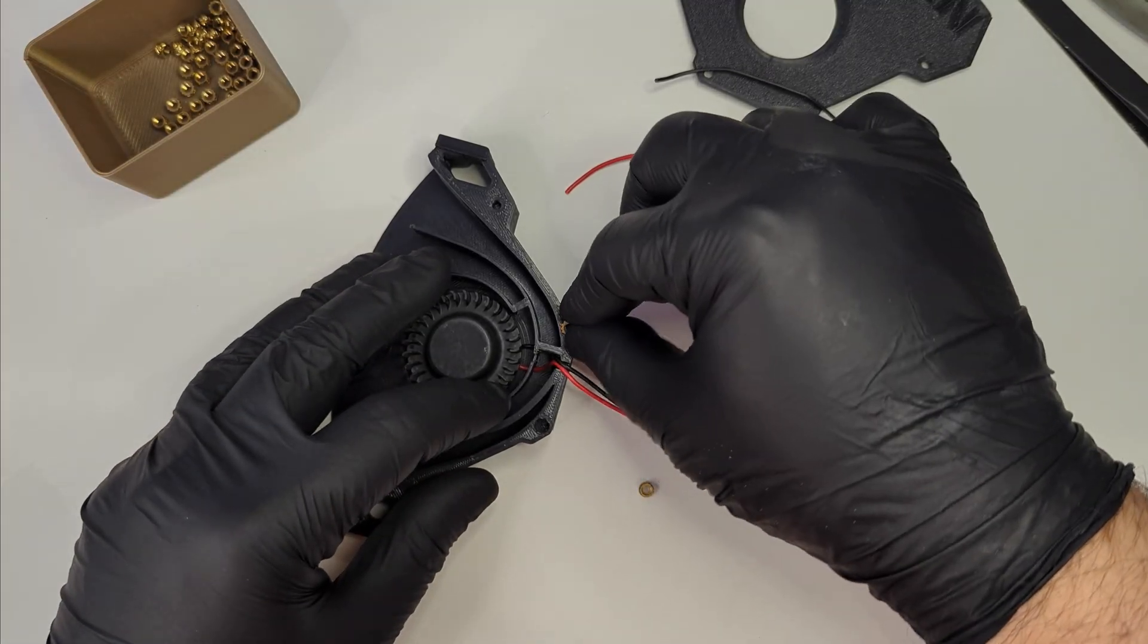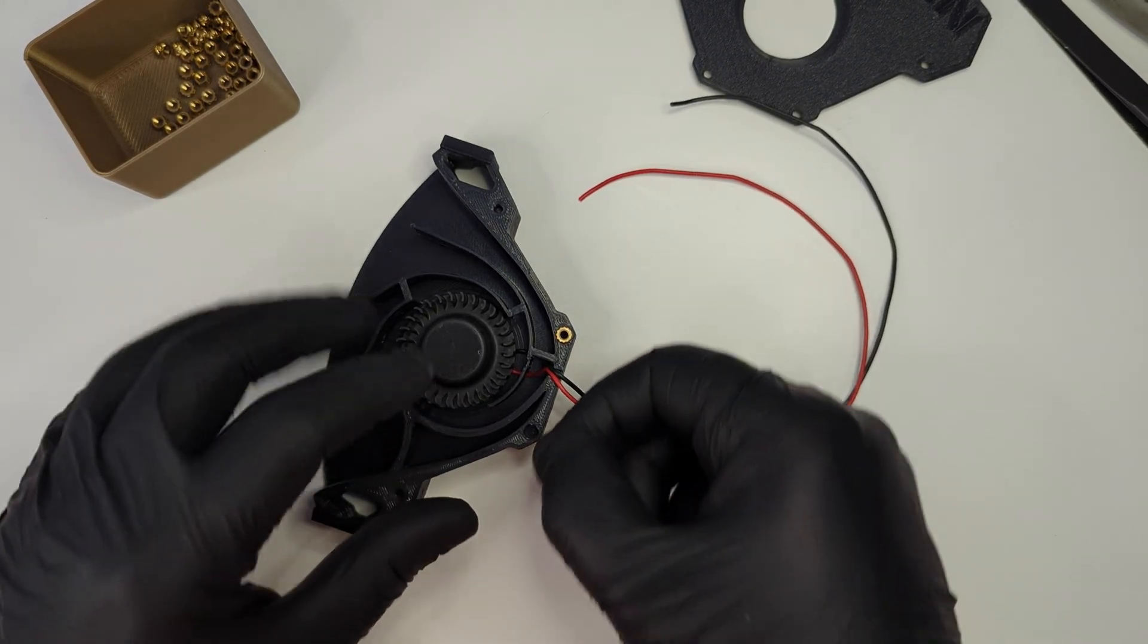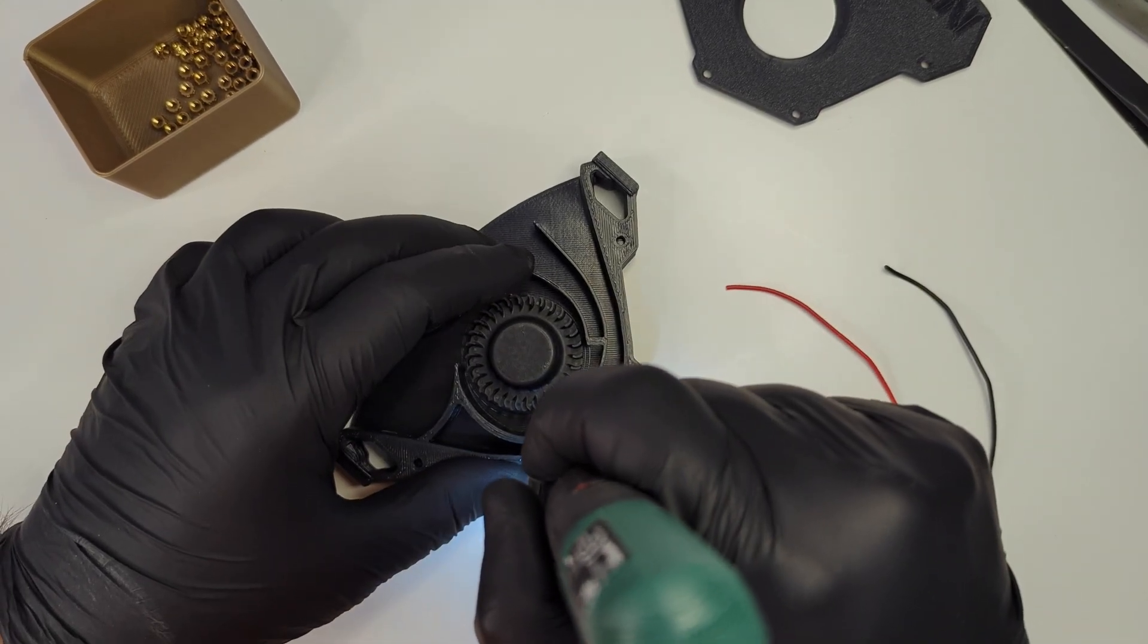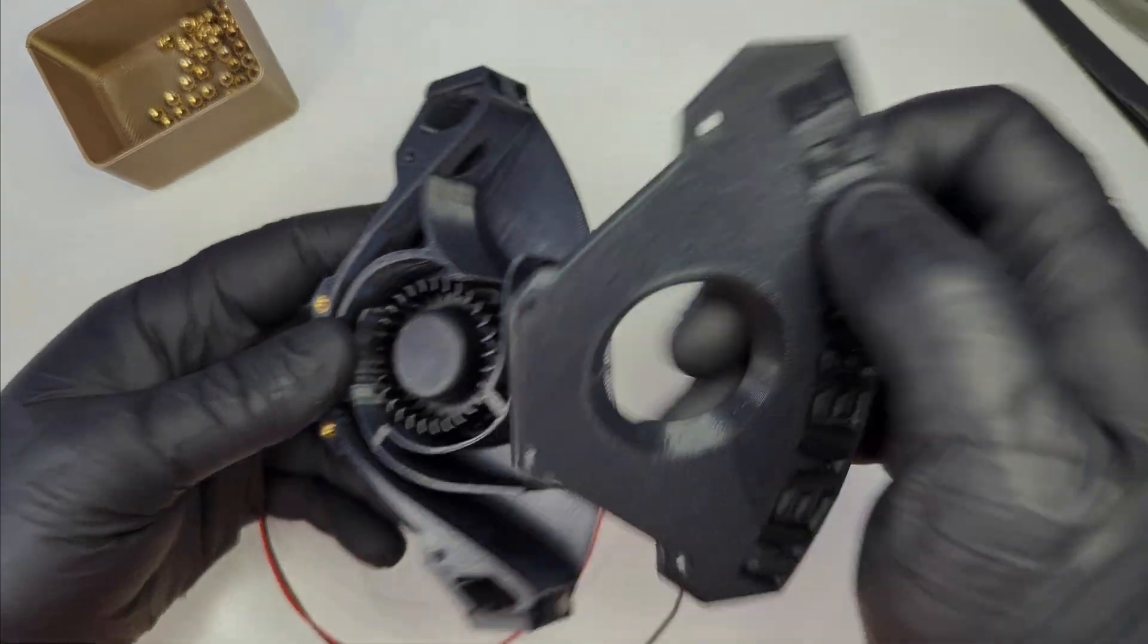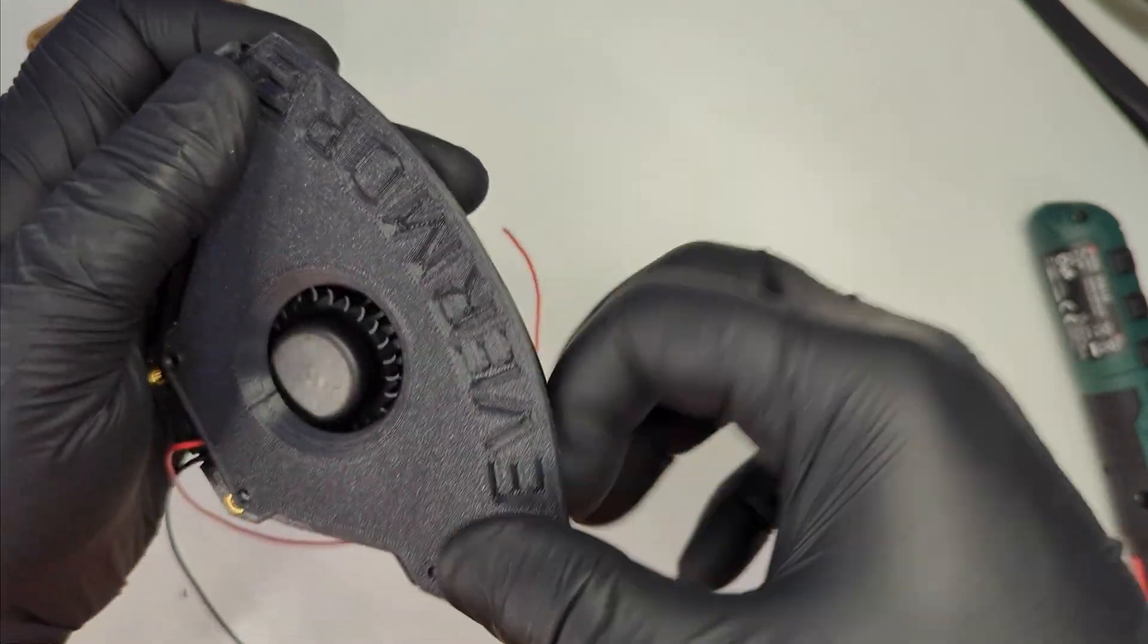Now it is time to put two heat inserts into the bottom holes. Once that is done, it is time to put the plenum together. The cover nicely slides in from the top.